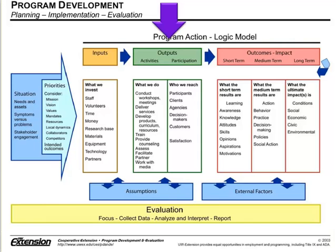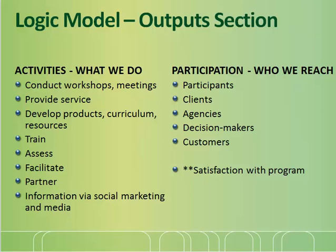Now let's look at the output section. Outputs encompass the activities that will be offered and who will be targeted for participation in the educational program. To complete the output section, you will cover activities and participation. Activities are what we do; participation is who we reach. Under activities, you might list workshops or meetings, services you're providing, products you might be developing, training, assessment, facilitation, partnering, or information provided. Next comes who you plan to reach: participants, clients, agencies, decision-makers, and customers. You can also cover whether participants are satisfied with your program.